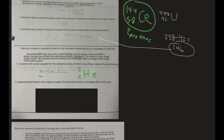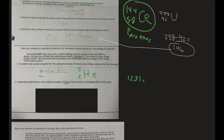Number six: determine the fraction of the original sample of tritium that remains unchanged after 24.62 years. This is a half-life question. From the reference table, the half-life of tritium (hydrogen-3) is 12.31 years.